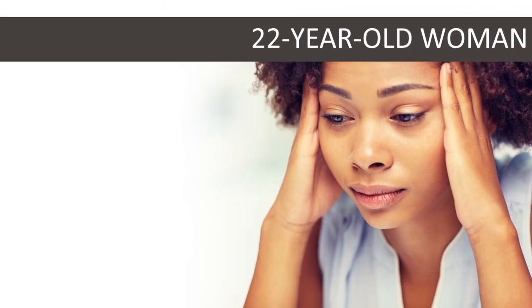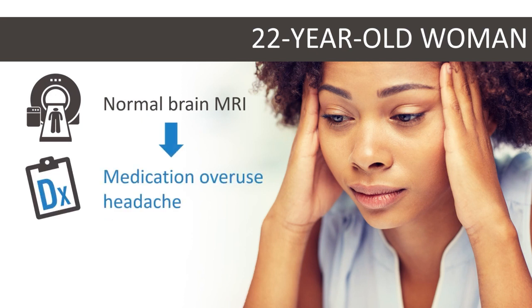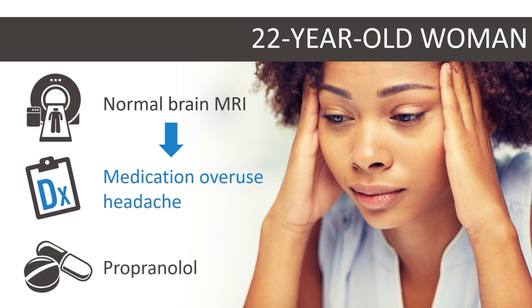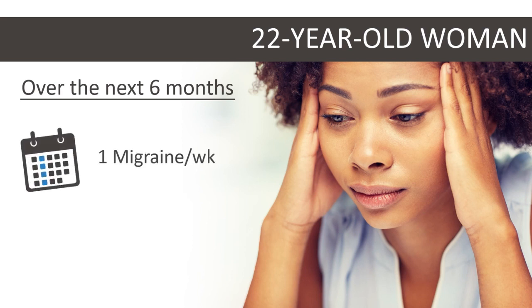Let's return to our case. Given the patient's normal brain MRI, she is diagnosed with medication overuse headache due to NSAID and triptan overuse, likely precipitated by a worsening baseline migraine frequency. Propranolol, one of the most effective first-line medications, was started for migraine prevention, thus lowering her rescue treatment use. Over the following six months, her headache frequency reverted to one migraine per week, which was successfully treated with almotriptan.